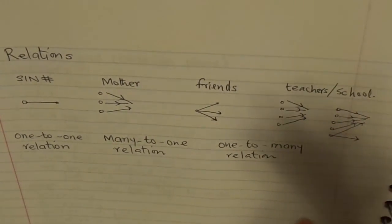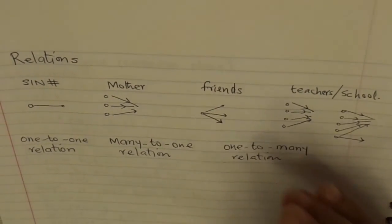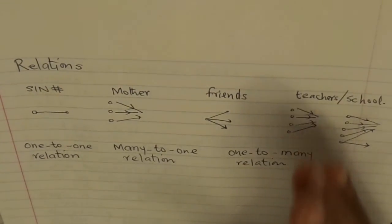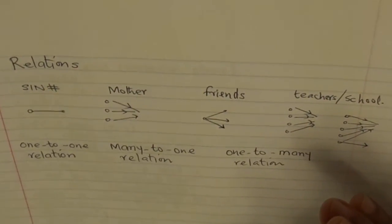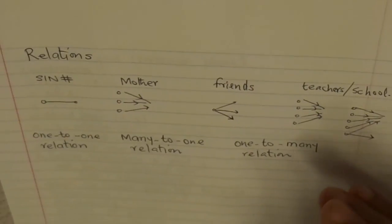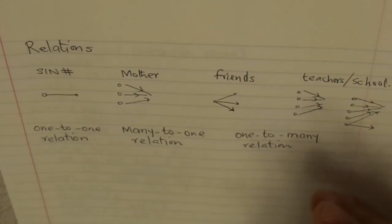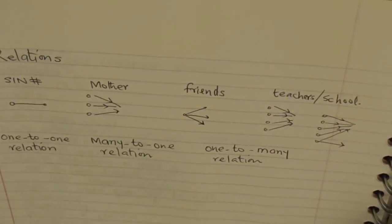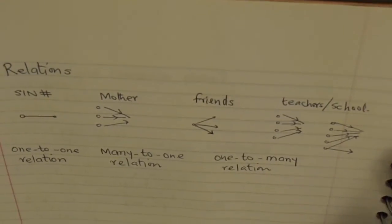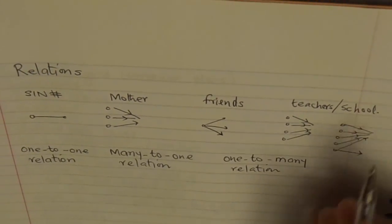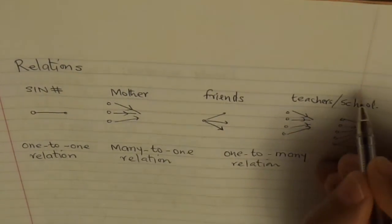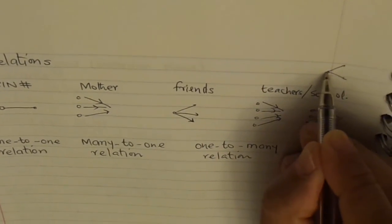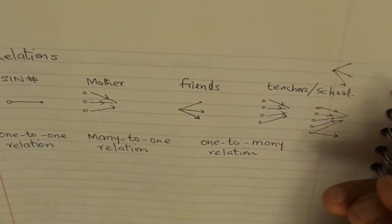We can see relations from the other side also. When we say teachers to school, there could be many teachers associated with the school. We could also see this relation from school to teachers — in that case, a school will have many teachers, making it a one-to-many relation.